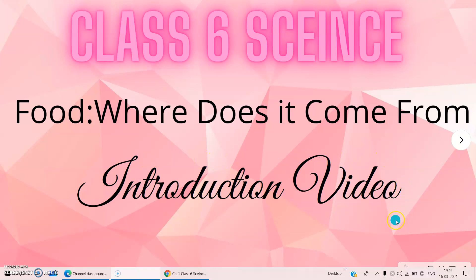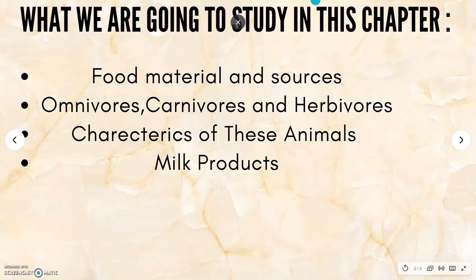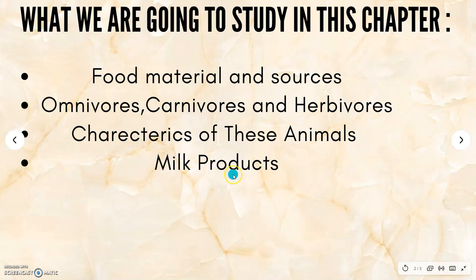This is basically an introduction video. In this video, I will make sure that you are connected to the theme of the chapter. So first we will look at what we are going to study in this chapter. We are going to study food material and sources, omnivores, carnivores, and herbivores, and characteristics of these animals. Also, we are going to talk about some milk products. You only need to learn about these as only these will be coming in your exams.